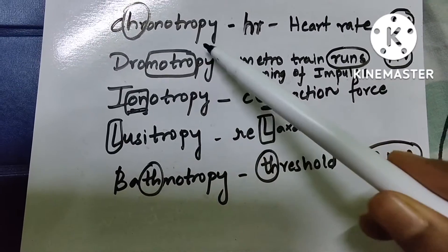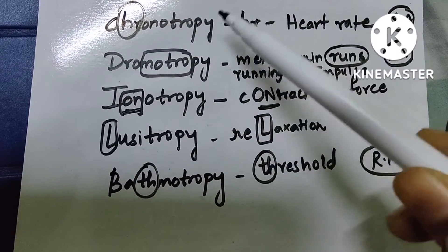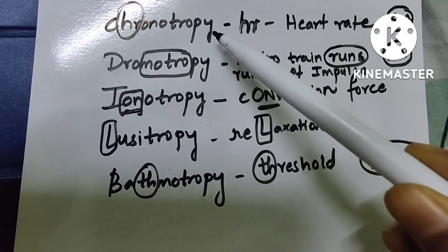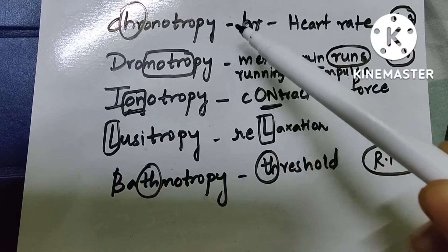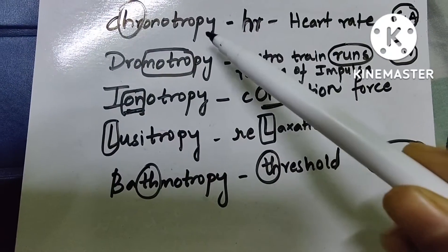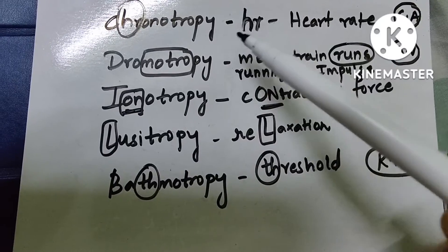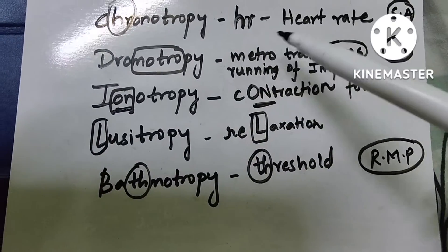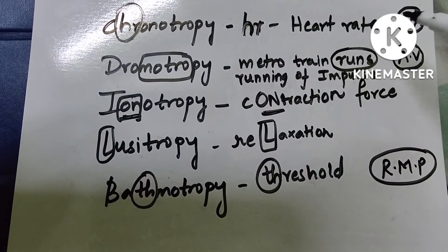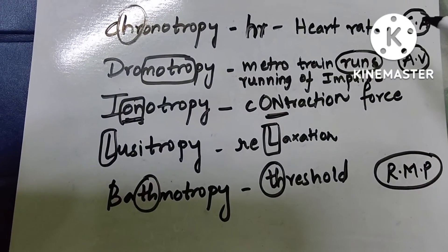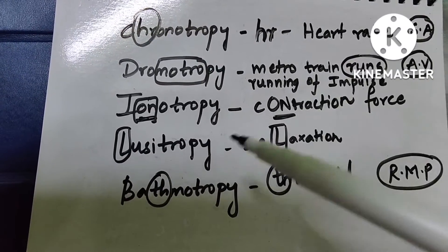First is chronotropy. Chronotropy has 'HR' in it, so it is related to heart rate. Chronotropy has positive and negative effects: positive chronotropy means increased heart rate, and negative chronotropy means decreased heart rate. Heart rate is related to the SA node, which is the pacemaker of the heart.